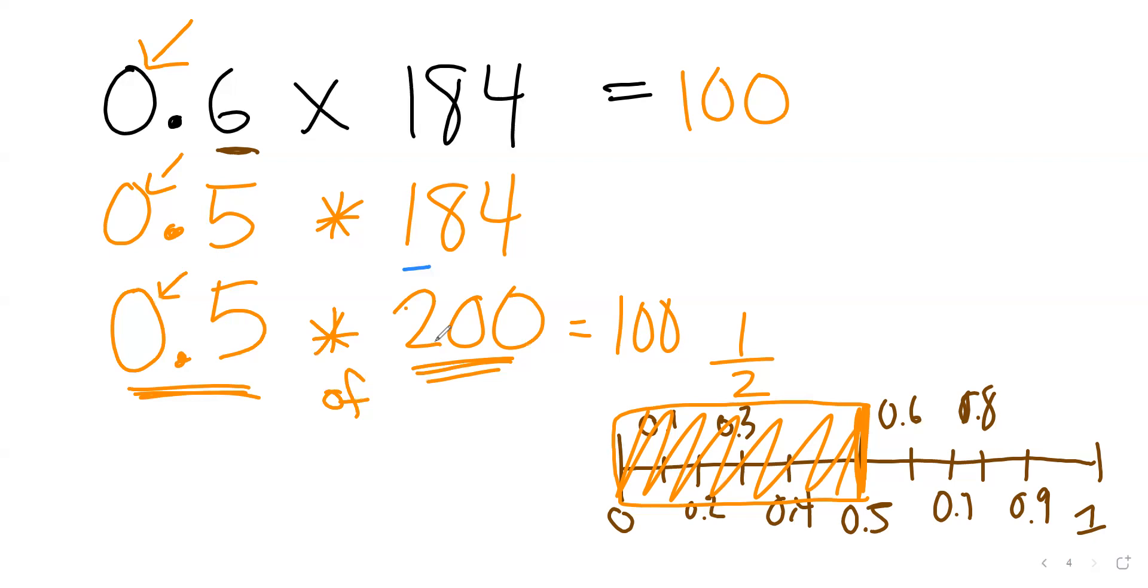If I even wanted to be more accurate, I could say I have half and I'm going to round this to 180. Because I know that half of 18 is 9. So actually I could get even a closer estimation of 90. This would be about 90. That's a pretty cool way of looking at it.